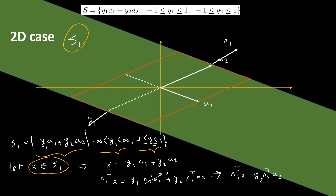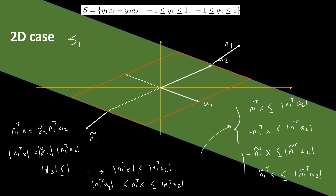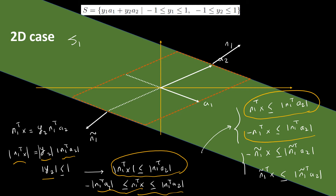Suppose x belongs to S1, so we can write it as y1·a1 + y2·a2. Multiplying both sides by n1-transpose, since n1 is perpendicular to a1 the first term on the right-hand side vanishes, and we get this equality. Taking the absolute value of both sides gives |n1ᵀx| = |y2| · |n1ᵀa2|. Since |y2| ≤ 1, we get this inequality, which can be written as two separate inequalities — giving us two half-spaces.